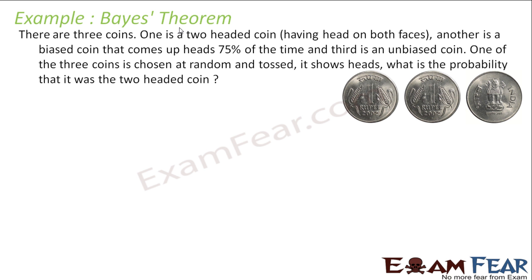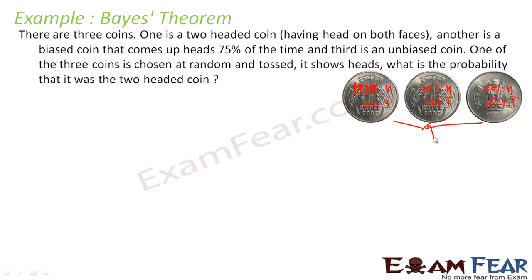The question says there are three coins. One is a two-headed coin — it has both heads, so 100% head and 0% tail. Another is a biased coin that comes up 75% head and 25% tail. The third is an unbiased coin — 50% head and 50% tail. One of the coins is chosen at random and tossed. It shows head. Find the probability that it was the two-headed coin.